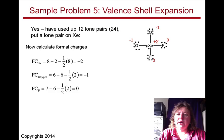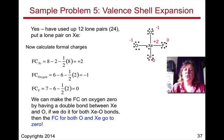The formal charge on xenon: 8 minus 2 minus a half of 8 is plus 2. Formal charge on oxygen: 6 valence electrons minus 6 electrons in lone pairs minus a half of 2 is minus 1. Formal charge on fluorine: 7 minus 6 electrons in lone pairing minus a half of 2 equals 0.